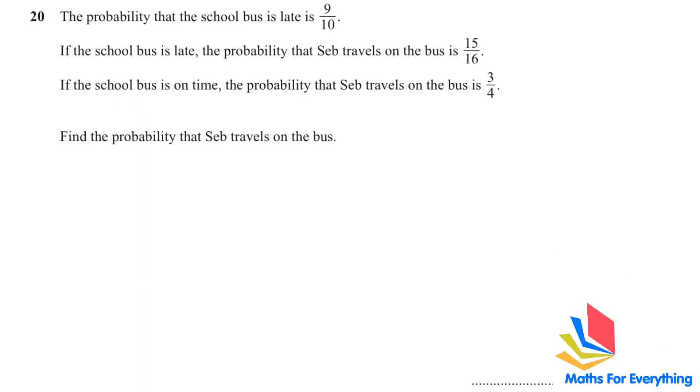Question number 20. Let's read what has been given to us. The probability that the school bus is late is 9 over 10. If the school bus is late, the probability that Seb travels on the bus is 15 over 16. If the school bus is on time, the probability that Seb travels on the bus is 3 over 4. Find the probability that Seb travels on the bus.